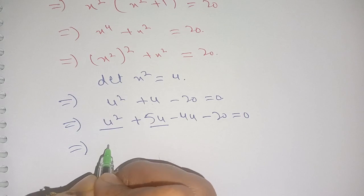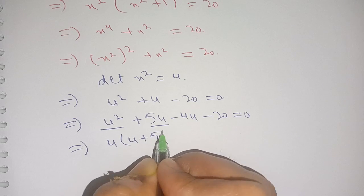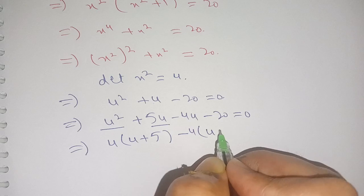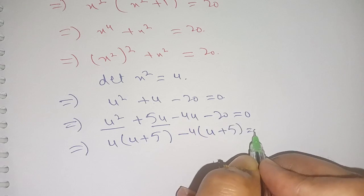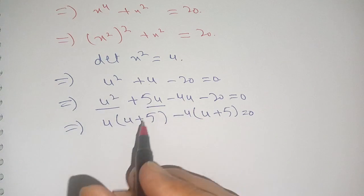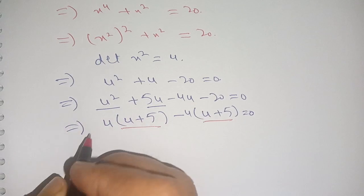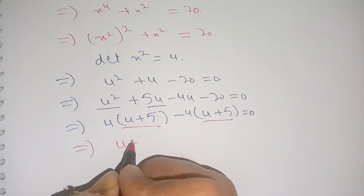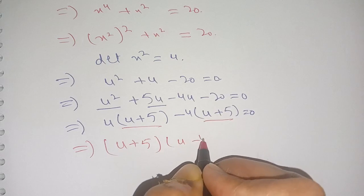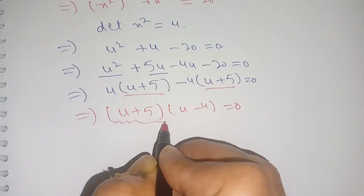From here we take out u from the first two terms and -4 from the last two terms: u(u + 5) - 4(u + 5) = 0. Taking out (u + 5) as a common factor, we get (u + 5)(u - 4) = 0.